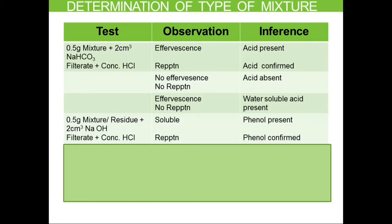How this washing is done will be shown in the live demonstration in this video. After the residue is washed clear of any acid, we proceed to test for phenol. We add NaOH, shake properly, and filter. To the filtrate, we add concentrated HCl, and if we get reprecipitation, a phenol is confirmed. It can often be difficult to detect whether a compound has dissolved; reprecipitation is the confirmation. Let us assume the phenol test came negative — no reprecipitation. When you get a negative test, it is advised to check the medium using litmus paper. Transfer a drop of the filtrate onto litmus paper: if blue litmus turns red, the medium is acidic, and if there is still no reprecipitation, we can be sure phenol is absent.